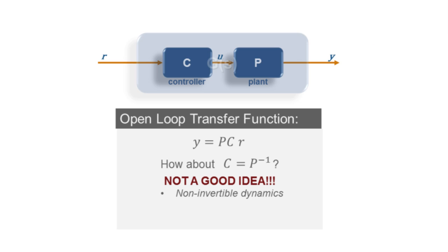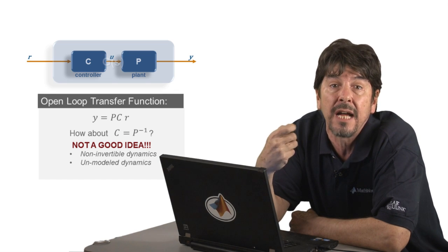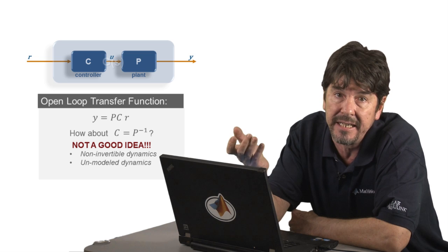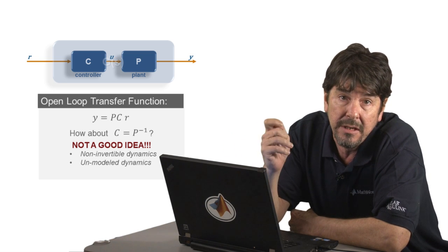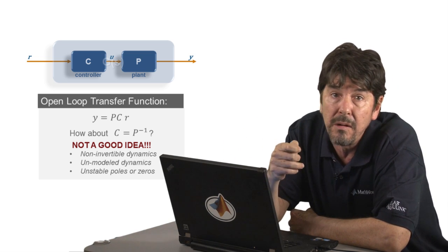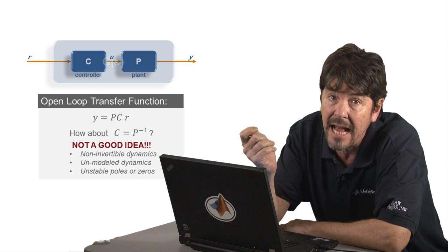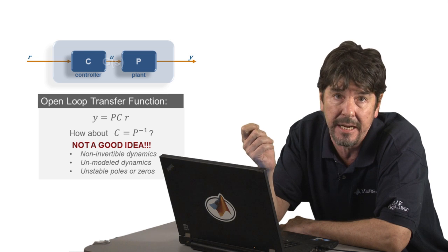Also, it is very likely that your plant model will not be perfect, so that even if you could cancel it out, your controller would not be accounting for any unmodeled dynamics. In addition, your plant might have unstable poles or zeros located on the right-hand side of the complex plane, and trying to directly cancel any of those can be a really bad idea.